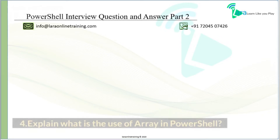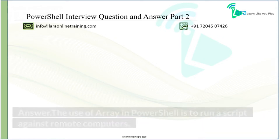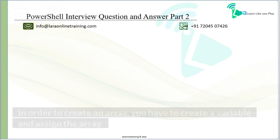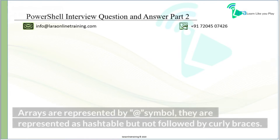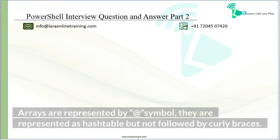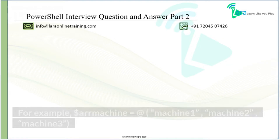Explain the use of array in PowerShell. The use of array in PowerShell is to run a script against remote computers. In order to create an array, you have to create a variable and assign the array. Arrays are represented by the @ symbol; they are represented as hash tables but not followed by curly braces. For example, $Rmachine = @('machine1', 'machine2', 'machine3').